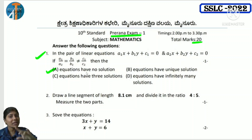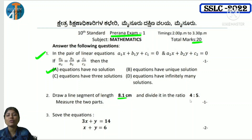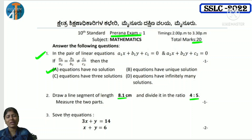We already discussed this and it is in the question paper. Next — dividing the line segment in the ratio 4:5, this is from the construction lesson. Practice this — dividing a line segment as given in the construction lesson.